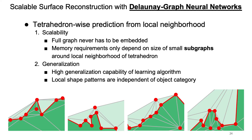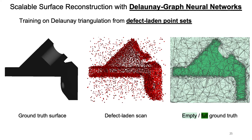When we train our network on small subgraphs of defective input point clouds, our network learns to be robust against noise and outliers present in the input, leading to more accurate empty-full predictions and finally to a more accurate surface. To train our network we synthetically scan shapes from the ShapeNet library, create the Delaunay triangulations from these defect-laden scans, and because we know the ground truth surface we can train our network with the ground truth empty-full value of each tetrahedron.